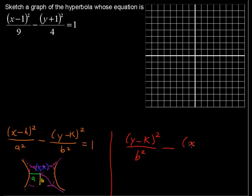Now we have minus (x - h)² - again this h stays with the x - over a² equals 1. Now because it's y minus x, or the y term minus the x term, then we're going to say that this opens up or down.